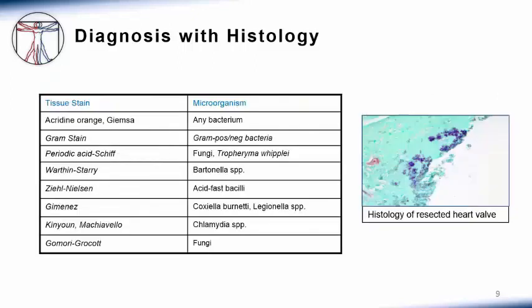Sometimes the diagnosis is made after the patient undergoes surgery and has the valve resected. Histology of the resected heart valve can provide diagnostic information. Listed here are various tissue stains that can provide clues to the microbiologic etiology of the infection. It's not important that you know the actual stain for the microorganism; it's important that you just understand this concept.